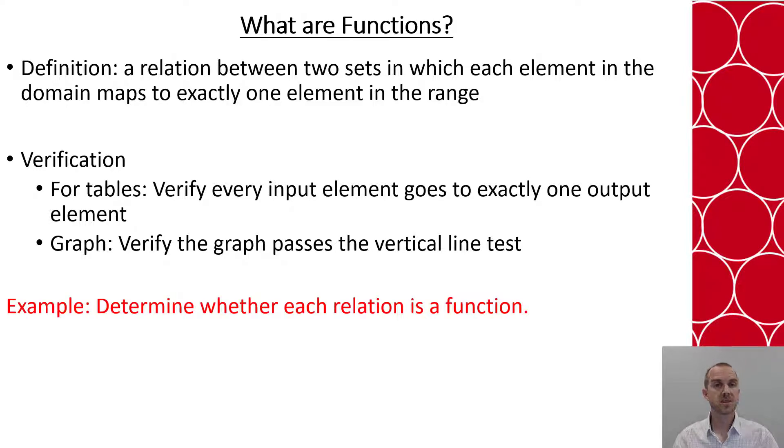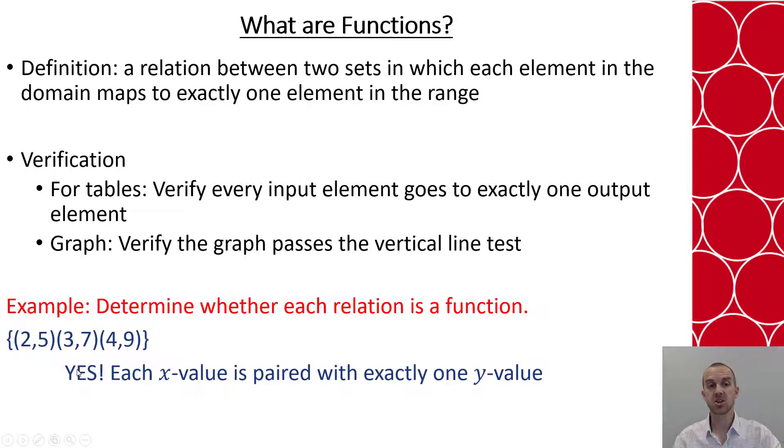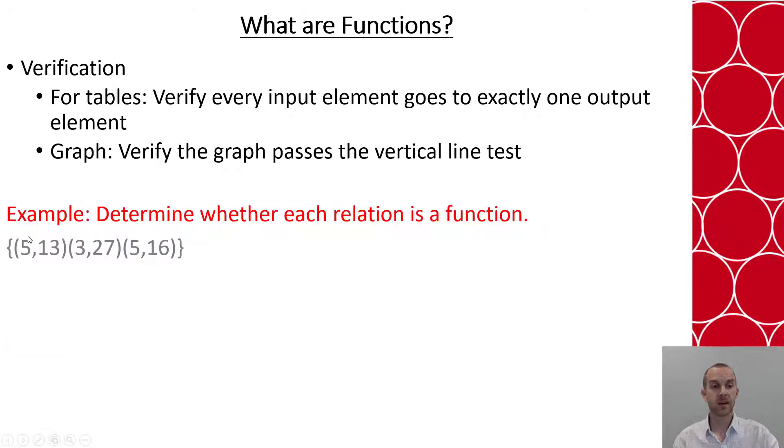So let's look at some examples. Here's a set with three ordered pairs. Each X value goes to exactly one Y value so yes this is a function. Now compare that, in this set we have an X value of 5 that's being used for two different Y values. That's not allowed for a function so no this is not a function.